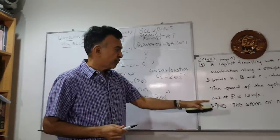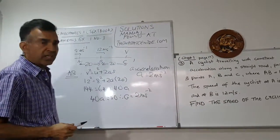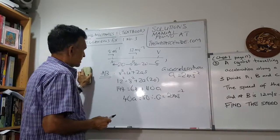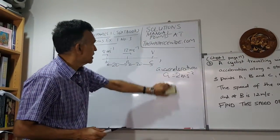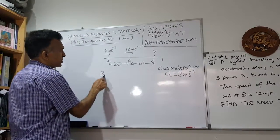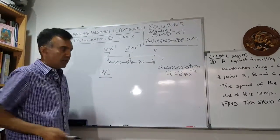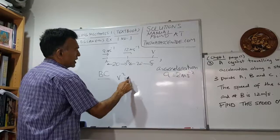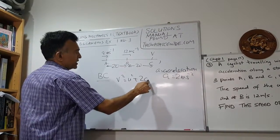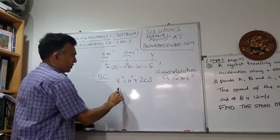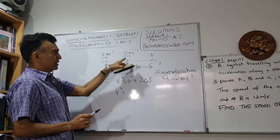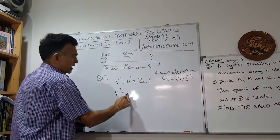Now let's consider the stretch BC. Using the same formula v² = u² + 2as, the speed at C is v, so we have v². What's u? It's 12². Plus 2 times a, which is 2, times s, which is 20.